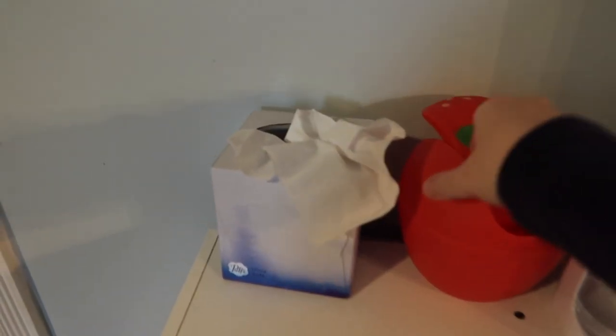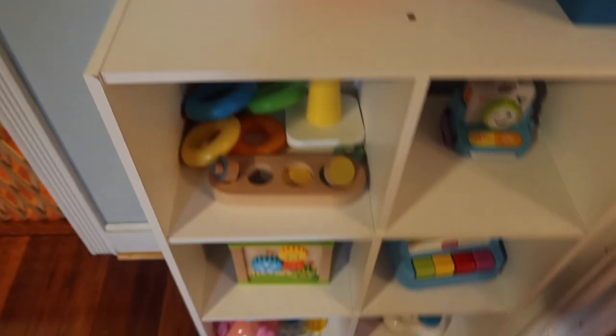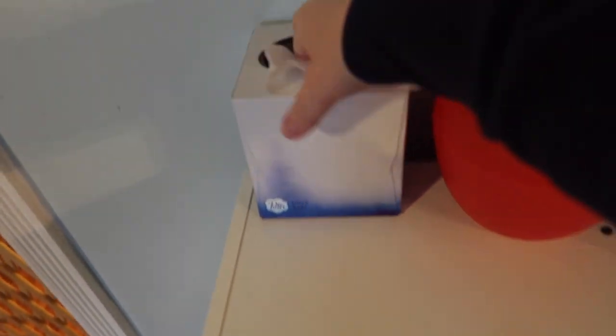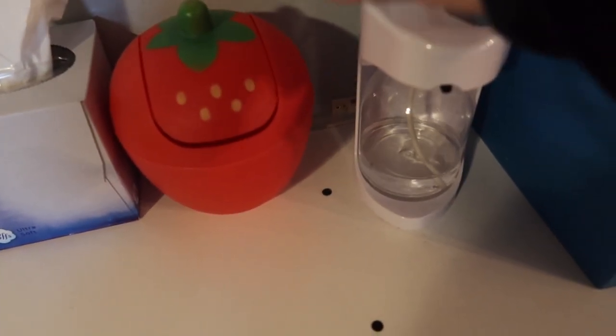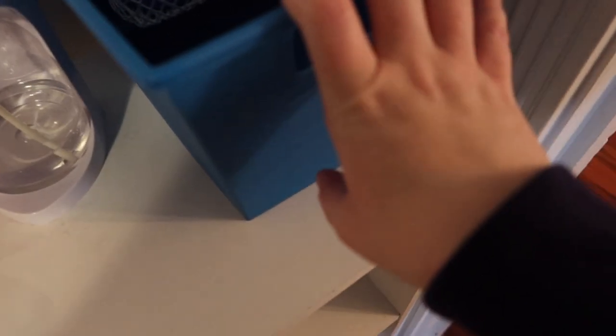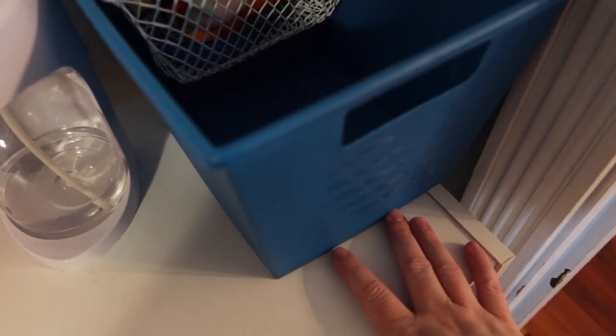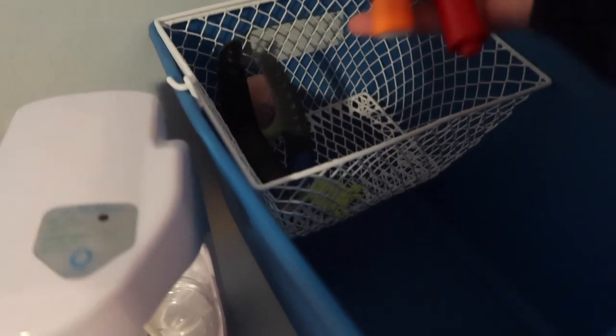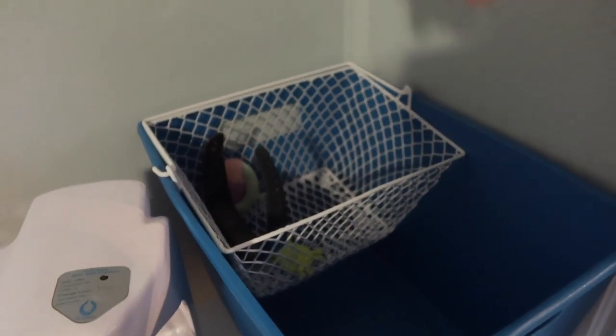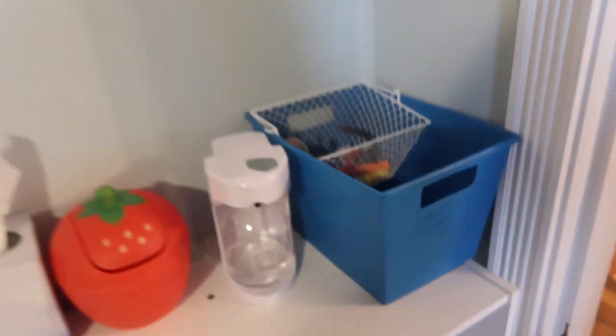On top of this toy shelf I keep what I call my snot station, so we have tissues, garbage, hand sanitizer, and then this is the yuck bin where I put toys that have gone into kids' mouths. Up here is just a basket. I keep the markers for a cleanup chart. I used to just keep them in here and I didn't feel like digging through the yuck bin to find them, so I gave them their own little basket.